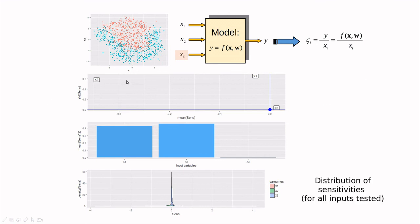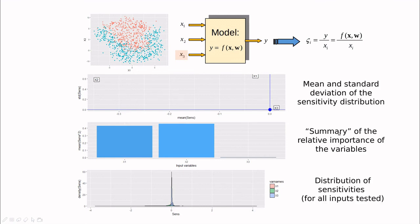But again, if you don't want to mess up with this plot, this is the best, the most important one. So this is a summary of the relative importance of the variables. And as you can see here, the method is really good because it's saying that the sensitivity of this noise is zero, which is actually what we want to do.